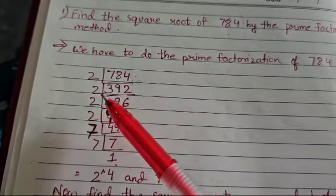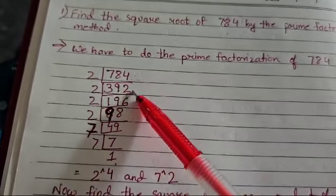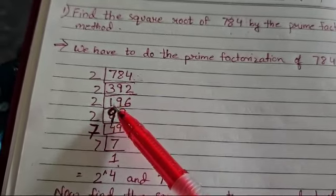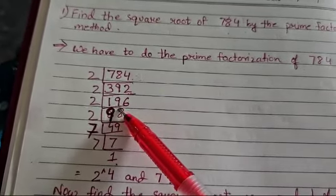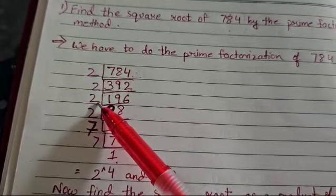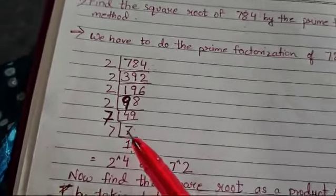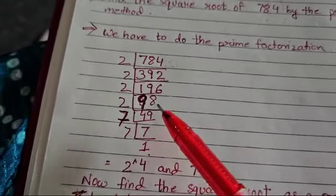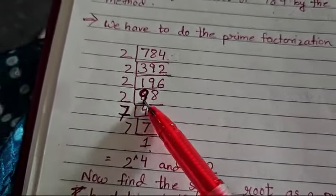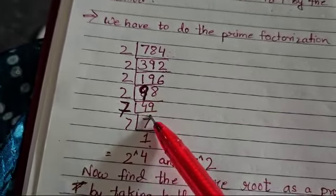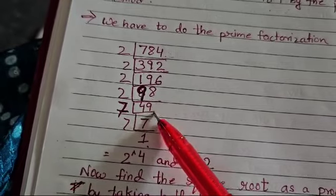Then again, since the last digit is 2, it will be divisible by 2 again, so we get 196. Again the last digit is 6, it will be divisible by 2. These are all the rules of divisibility to understand which number will divide the numbers. So again you get 98. Again the last number is 8, it will be divisible by 2. You get 49.